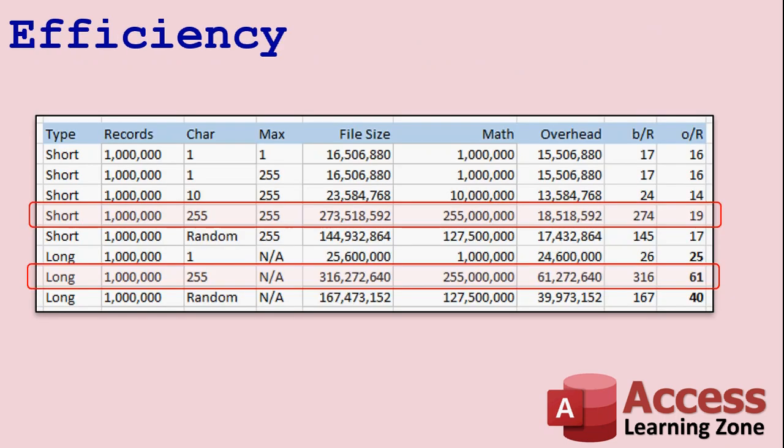Short text fields are much more efficiently stored in the database as far as the size of your database goes. Long text fields, not so much. I recently built a database to test short and long text fields. I added a million records of different sizes and then checked the file sizes both before and after compacting the database. As you can see right here, with a million records of 255 characters each: the file size with short text fields turned out to be 273 megabytes, whereas with long text fields it's 316 megabytes — a lot larger to store the same information.